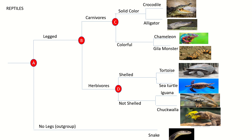The legged group then diverges again at node B into carnivores and herbivores. The carnivore group diverges once again at node C into solid color and colorful carnivores. In the solid color group, we have crocodile and alligator. These are the most closely related OTUs on our chart, because their branches are the shortest. Crocodiles and alligators are very similar, with the only notable differences being their habitats and nose shape. In the colorful group, we have chameleons and gila monsters. These reptiles are both lizards and very colorful, and they are also carnivorous, but they differ in their habitats and way of catching their prey.